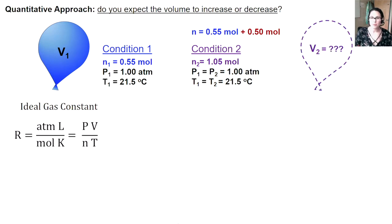A quantitative approach is going to use the data provided in the question and a simple calculation to come to the same conclusion. This can be very helpful for math-minded students. Also, a great way to verify your prediction is correct. Again, we'll start with our ideal gas constant R and our ideal gas equation. We know that our R is constant, so even if conditions change, P times V over N times T must always equal R. So we can set up this changing conditions equation.